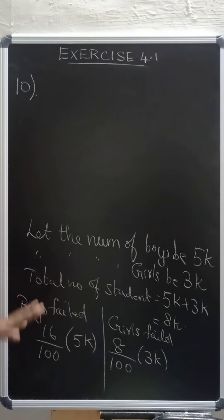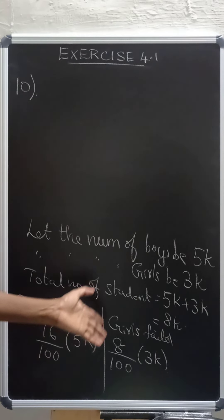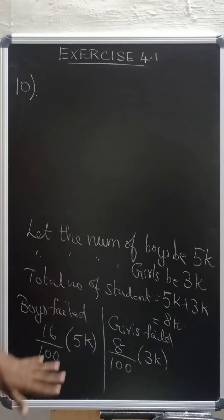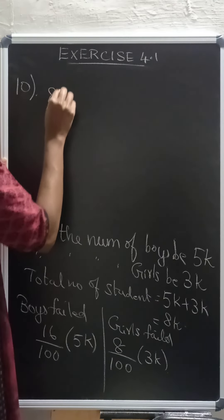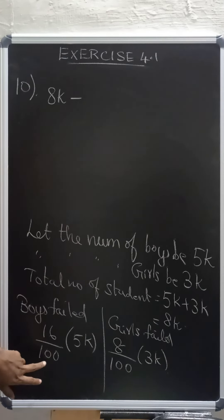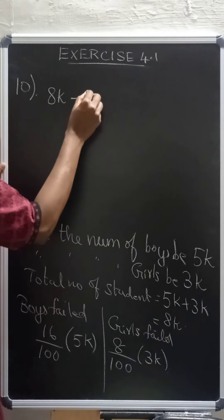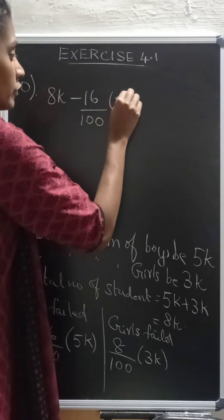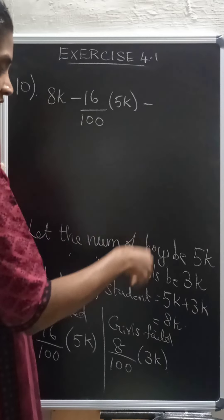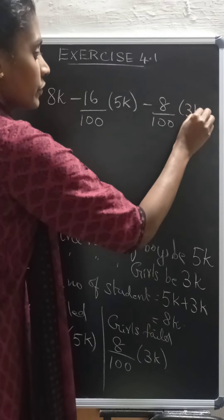Now, if we subtract from the total, this boys failed and girls failed, we will get those who have passed, right? So the total number of students is 8k and we are going to subtract boys failed and girls failed. Now, boys failed is 16 divided by 100 into 5k. Girls failed is 8 by 100 into 3k.